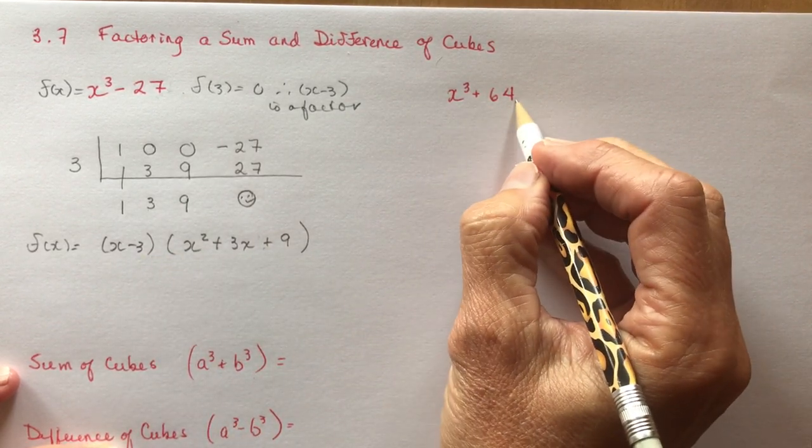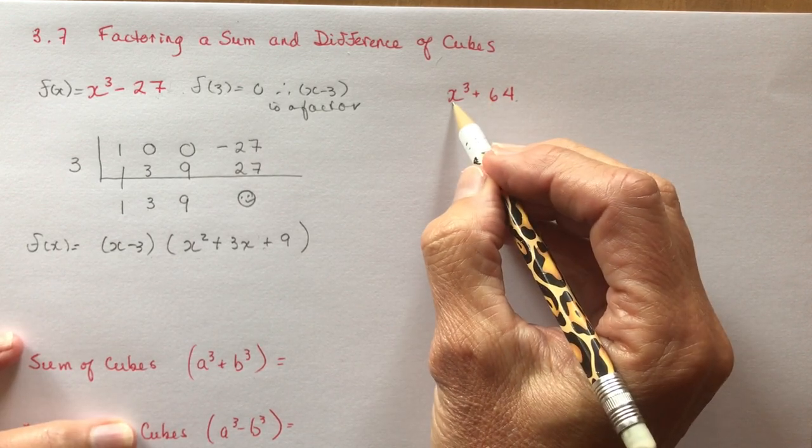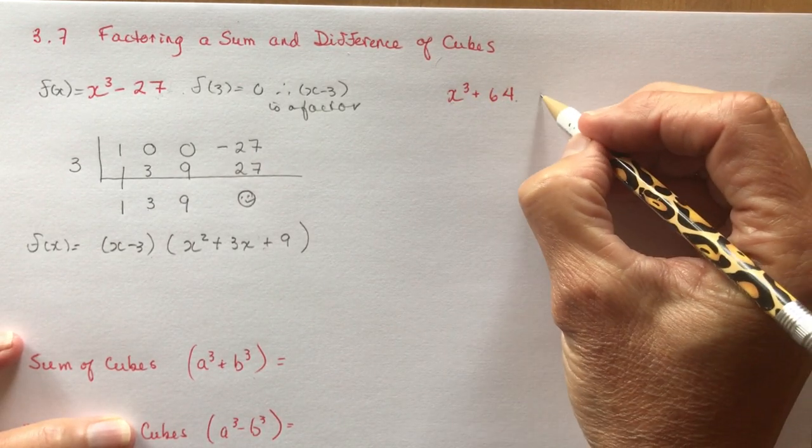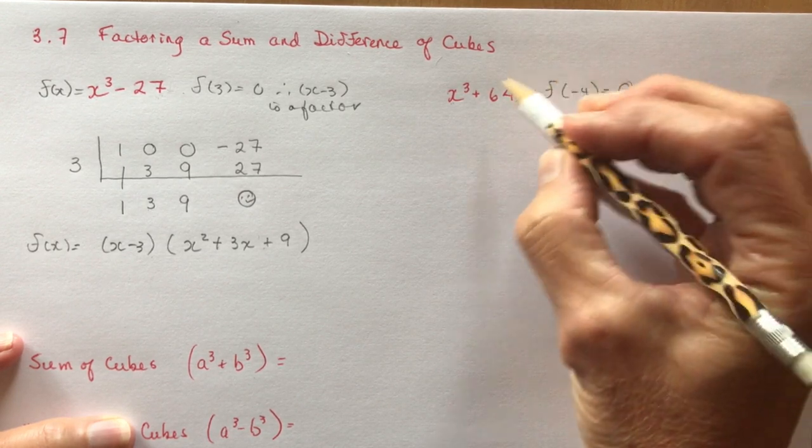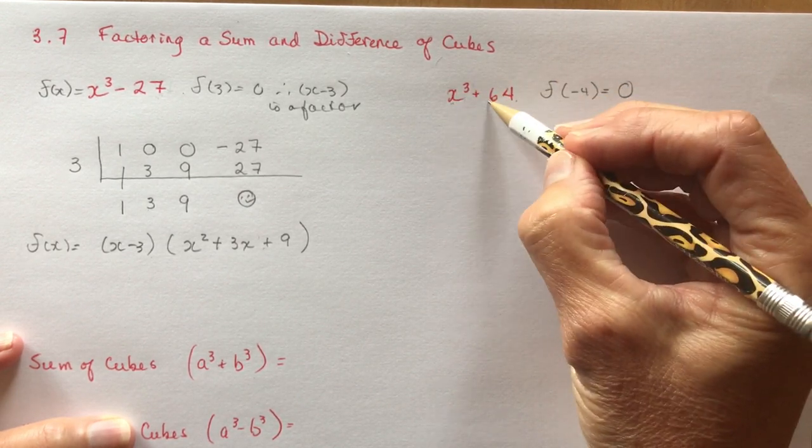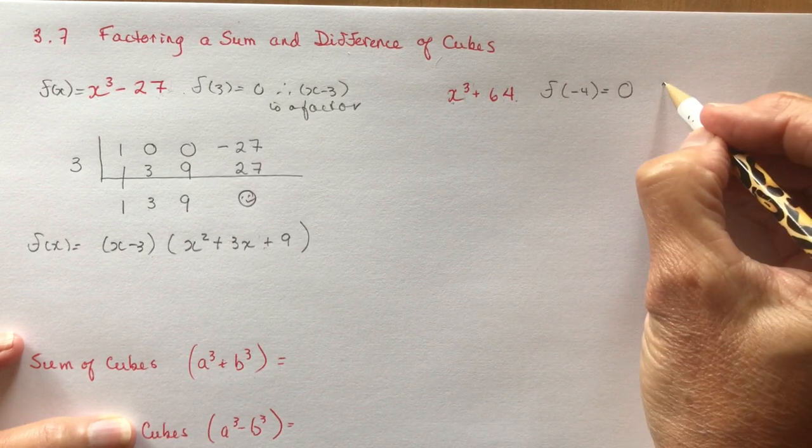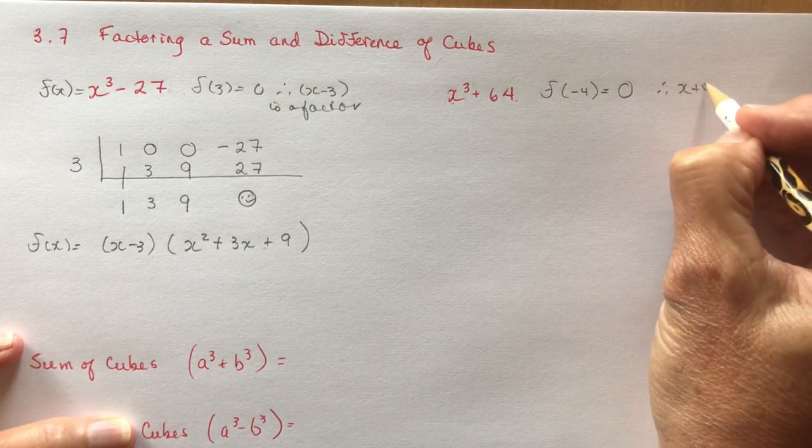And then we're going to try to make some sense between the actual formula and this. We're going to do this one first. Now what would I have to have here, f at what would give me 0? Hopefully you're saying minus 4, because minus 4 cubed is negative 64, plus 64 is 0. So x plus 4 is a factor.